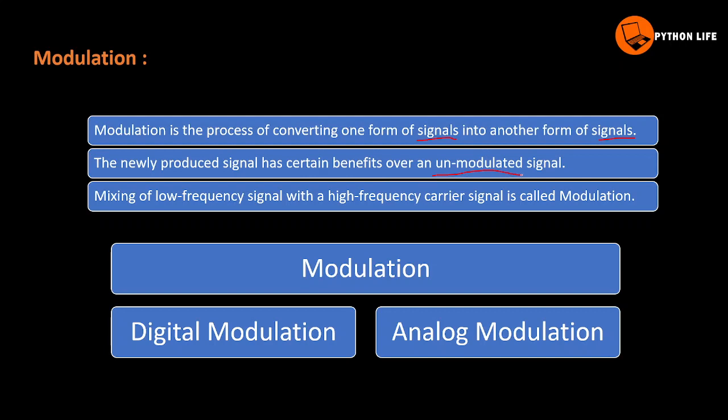Unmodulated is a normal signal. Low frequency signals have high frequency carrier signals added to them through modulation. This is modulation.